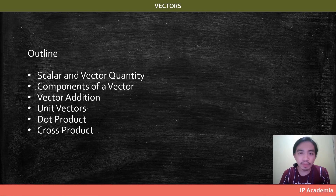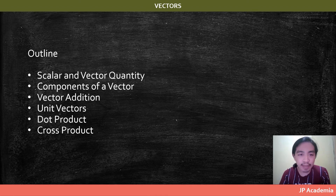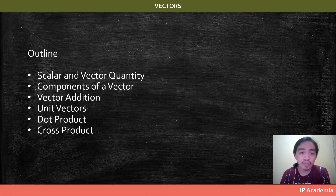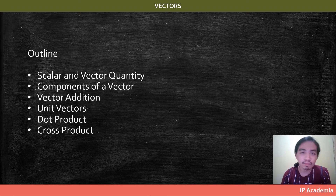Hey guys and welcome to JP Academia. In this video lecture, I will discuss vectors, and this is the outline of this lecture. I will start by discussing first what is a scalar quantity against the vector quantity definition. Then we'll discuss components of a vector, vector addition, unit vectors, dot product, and cross product. Let's start.